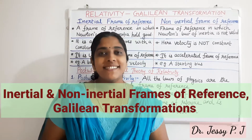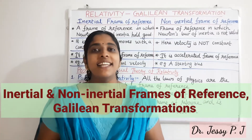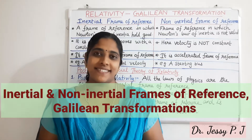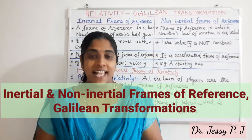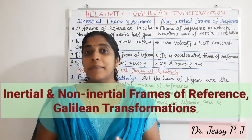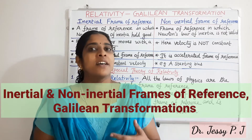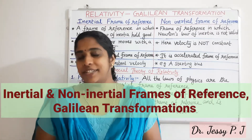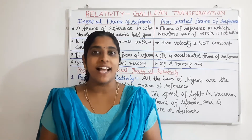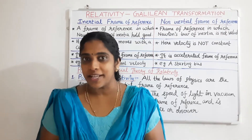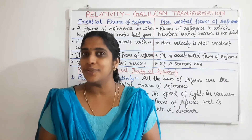Hi y'all, today we can see a topic under relativity, that is Galilean transformation equations. In 1905, at the age of 26, Albert Einstein published two research papers dealing with the special theory of relativity. He also published one paper regarding the explanation of the photoelectric effect, and for that explanation he got the Nobel Prize in 1921.